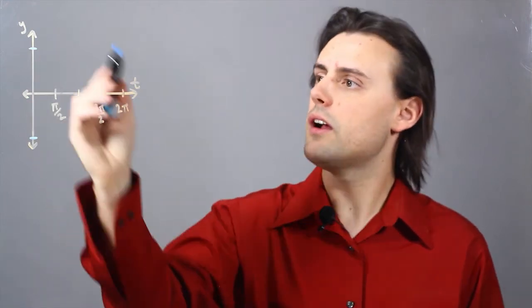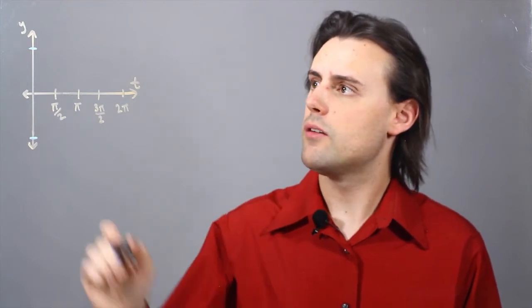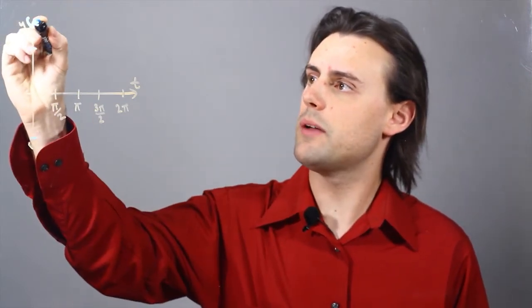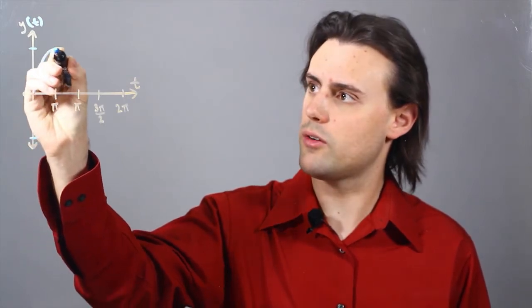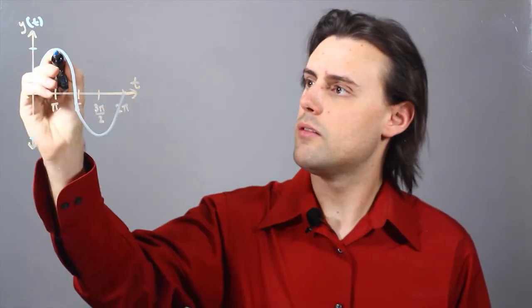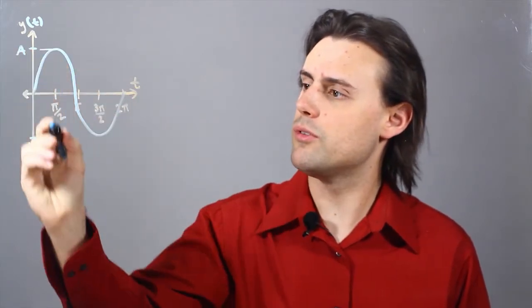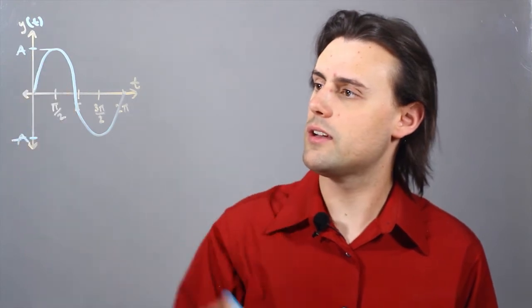So here I have my yt plane where y is a function of time and let's say I have a trigonometric graph, in this case a sinusoid, where the amplitude is equal to a. So I have positive a here and negative a here.